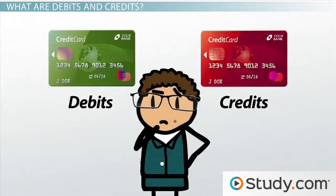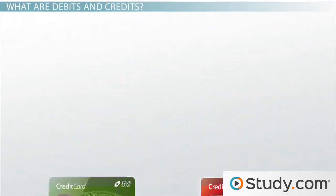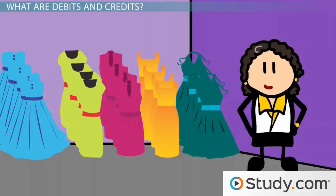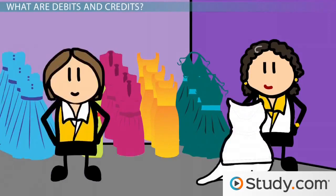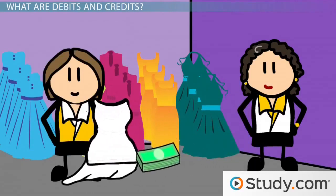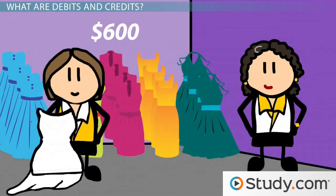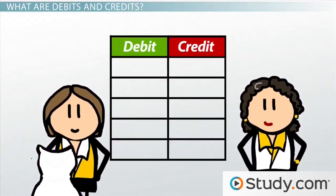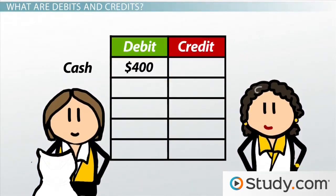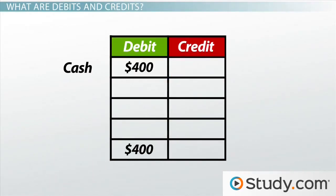It can seem a little confusing to understand debits and credits, so let's look at an example. Peggy owns a dressmaking shop. It's taken her two months, but she's just finished an elegant wedding dress for her customer. The customer paid a $200 deposit on the dress before Peggy made it. She comes in and picks up her dress and pays Peggy the $400 that she still owes on the dress. The total cost of the dress is $600. Using this example, you can see that Peggy was given $400 today for a balance due on a dress. That $400 is a debit to the cash account. This debit increases the cash balance by $400. Cash is an asset account. Since a deposit was made on the dress, it was sold on account.